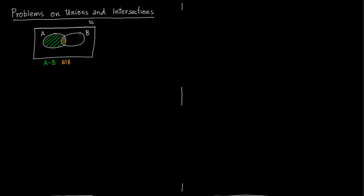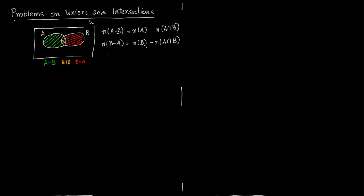Now, B minus A — I'm shading in red. You can see it is all of B except that small shaded portion in rust color which is A intersection B. So B minus A is all the elements which are in B but not in A. Number of elements in A minus B is number of elements in A minus number of elements in A intersection B. Similarly, number of elements in B minus A is number of elements in B minus number of elements in A intersection B.